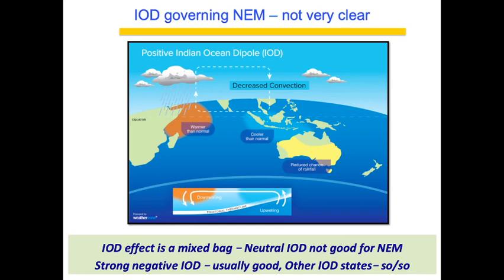Regarding IOD: the effect is a mixed bag. Neutral IOD is not good for NEM because Bay of Bengal and Arabian Sea states are not conducive. Strong negative IOD is usually good because it produces systems in the southern Bay of Bengal. Strong positive IOD is also decent for Northeast monsoon because the Arabian Sea branch becomes very active and can push some systems toward the Bay of Bengal. During strong positive IOD years like 2019, tropical easterly waves take over even if UAC is absent in the Bay, making NEM normal or slightly above. Other IOD states are unlikely to produce a successful NEM.